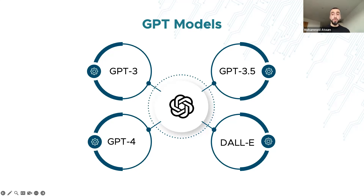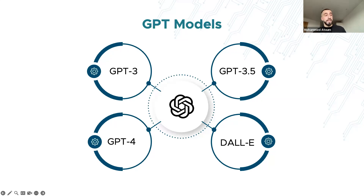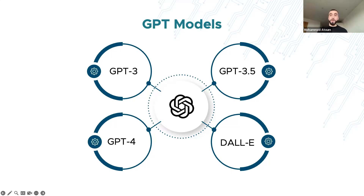GPT-3.5 is an upgraded version of GPT-3 with a parameter count of over 300 billion. It was trained on a blend of text and code and published just before the end of 2021, which is why its training data stops at that point and it cannot access more recent events. It has more advanced capabilities than GPT-3, generating more contextually human-like responses based on the conversation.